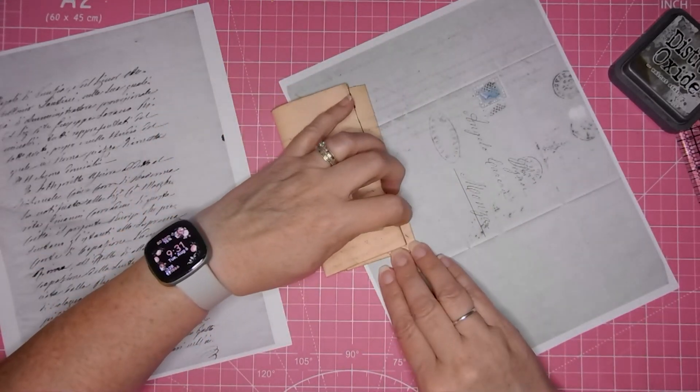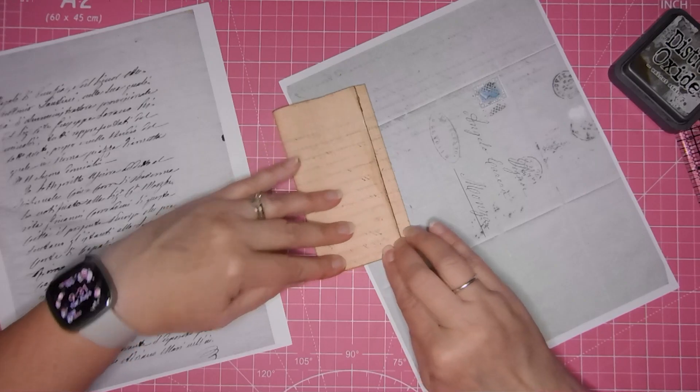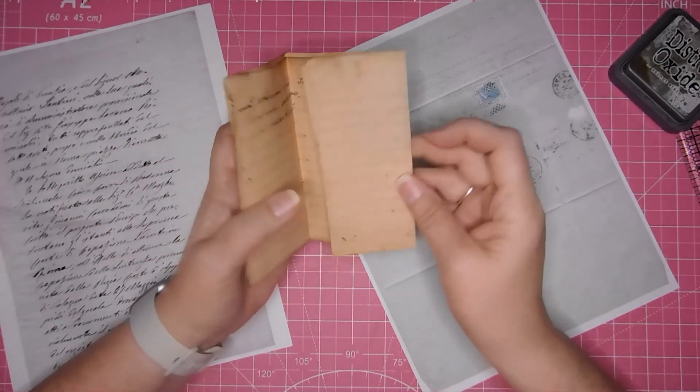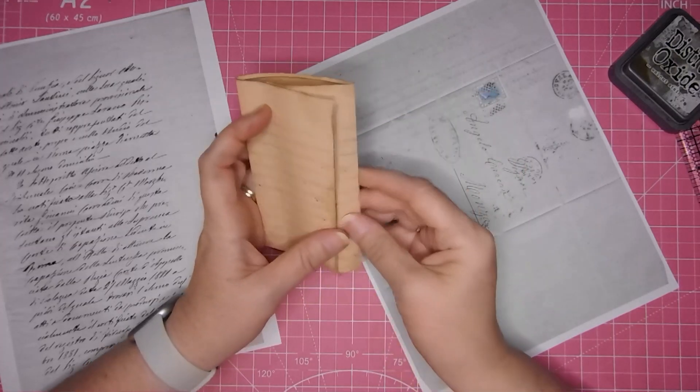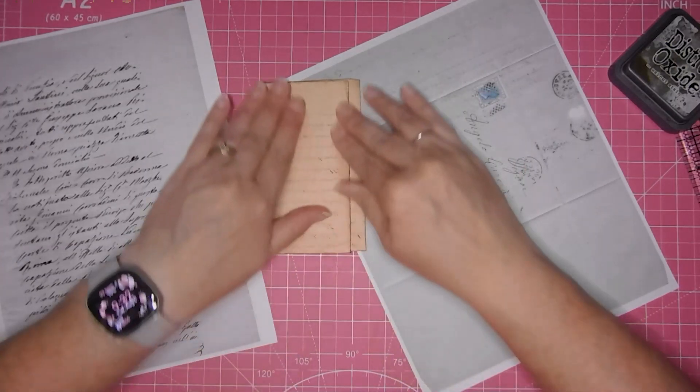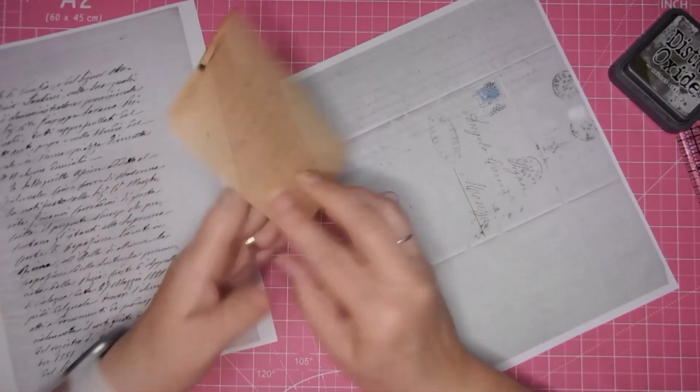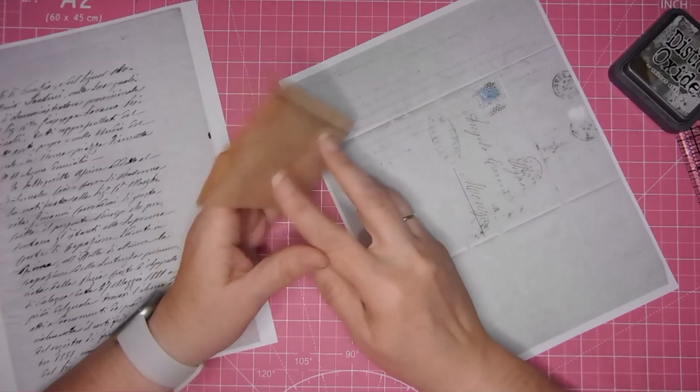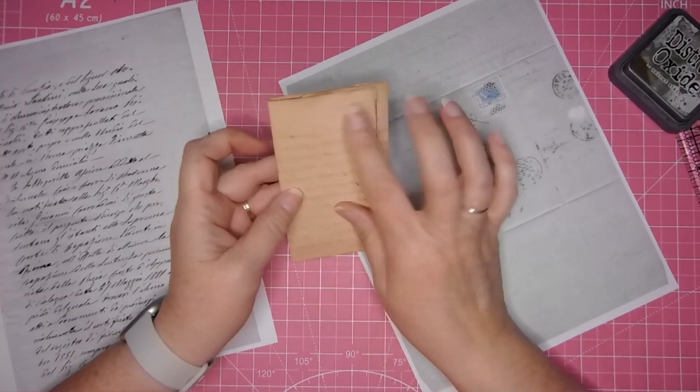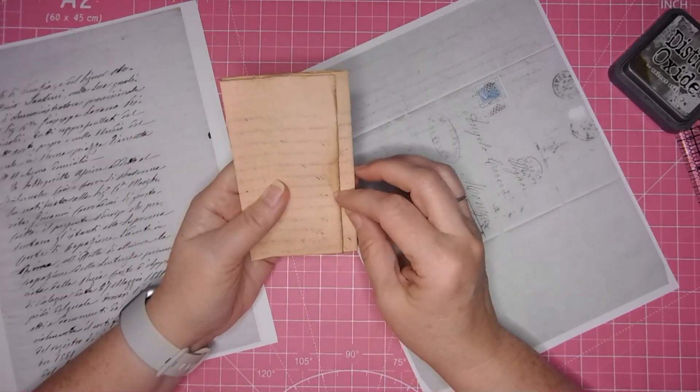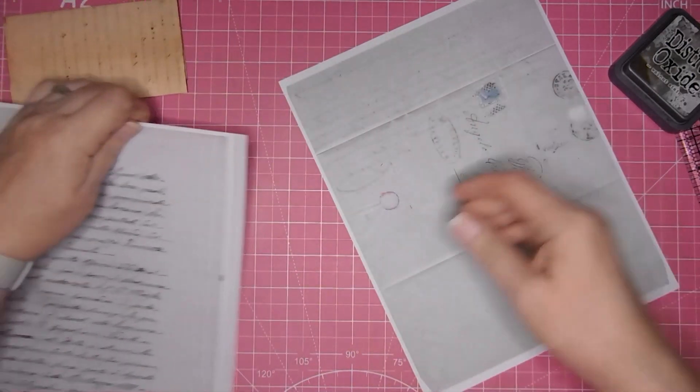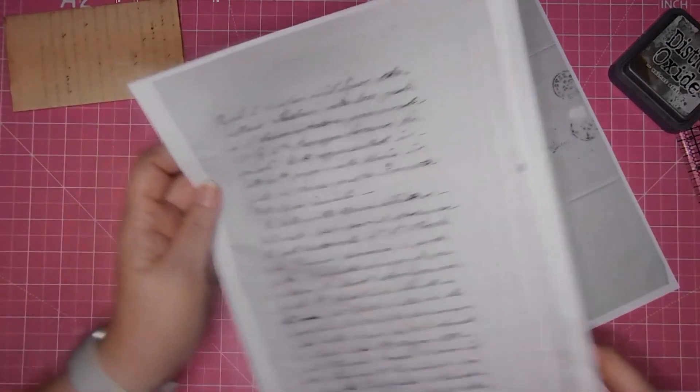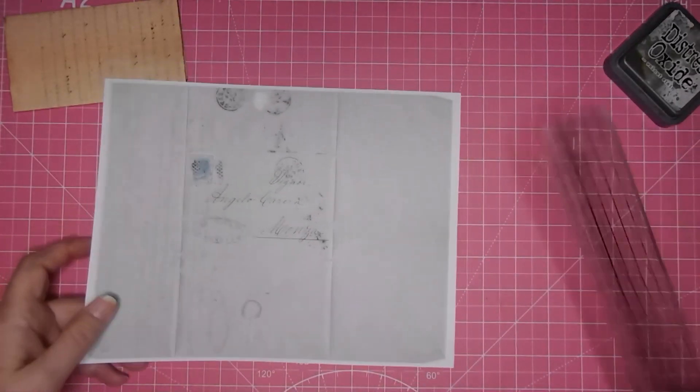They would either tie them with a string or they might use some kind of a seal. I'm just gonna do that like this and that'll be nice to tuck somewhere. Because it's so light on this side you can still write on that, so I think that's perfect. I'm not going to add anything to it.